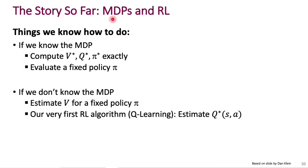P is the transition probability, P of S prime given S, A, and R is the reward function that maps from S, A, S prime to some scalar reward.